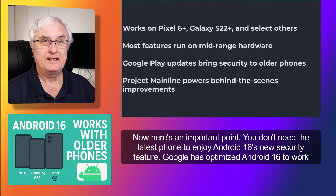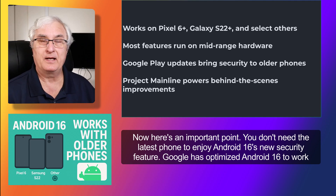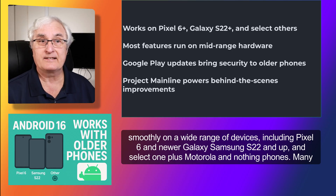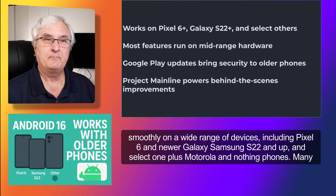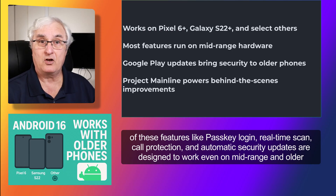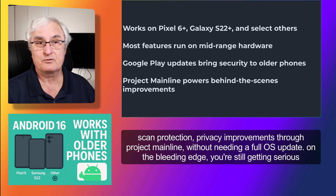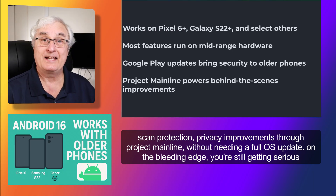You don't need the latest phone to enjoy Android 16's new security features. Google has optimized Android 16 to work smoothly on a wide range of devices, including Pixel 6 and newer, Samsung Galaxy S22 and up, and select OnePlus, Motorola, and Nothing phones. Many features like passkey login, real-time scam call protection, and automatic security updates are designed to work even on mid-range and older devices. And if your phone doesn't get Android 16 right away, you'll still benefit from Google Play system updates, which push out security patches, scam protection, and privacy improvements through Project Mainline without needing a full OS update. Even if you're not on the bleeding edge, you're still getting serious protection.